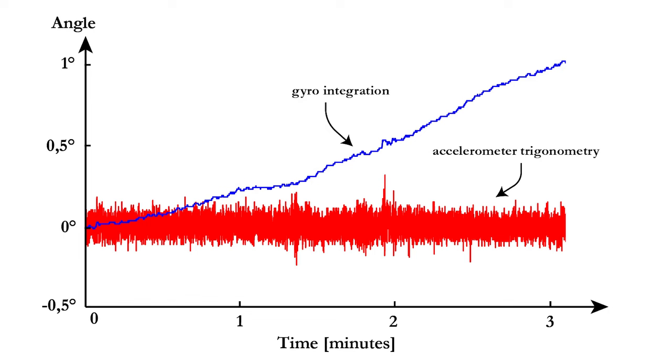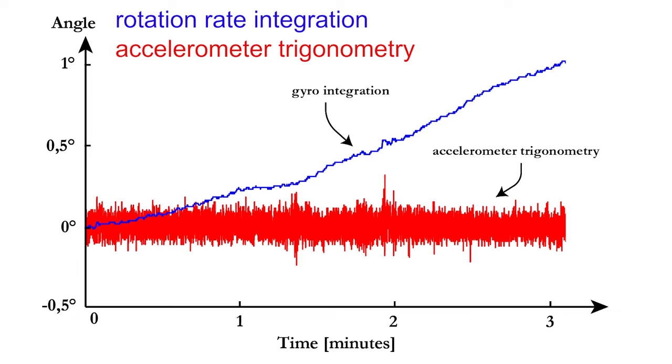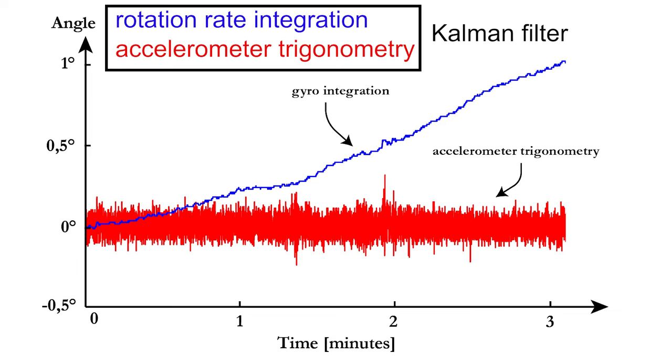Fortunately, there exists a mathematical method that allows you to combine both measurements without their individual disadvantages: the Kalman filter.